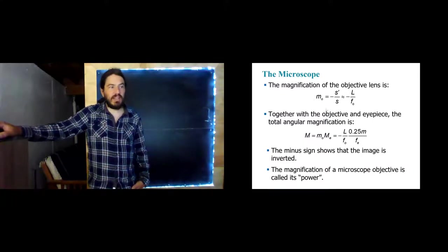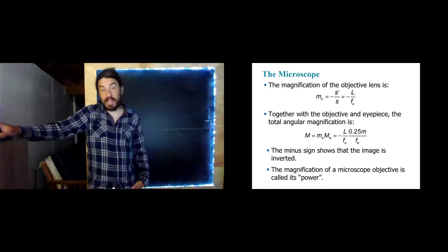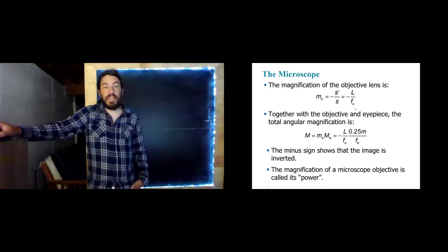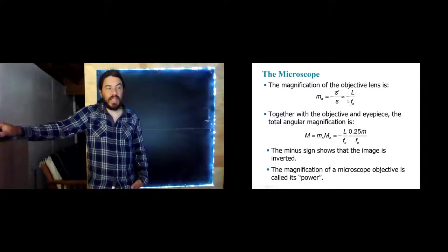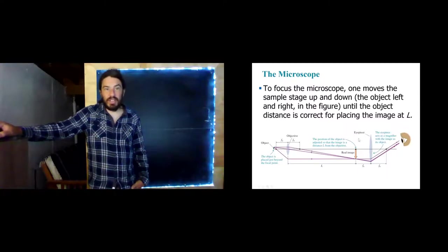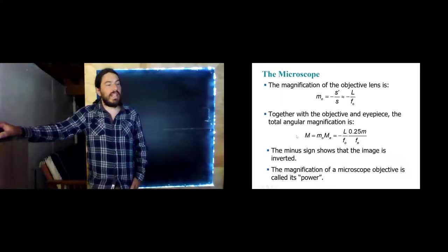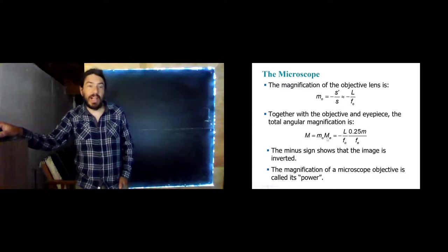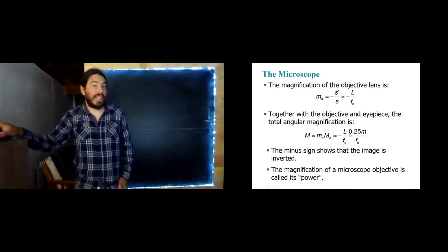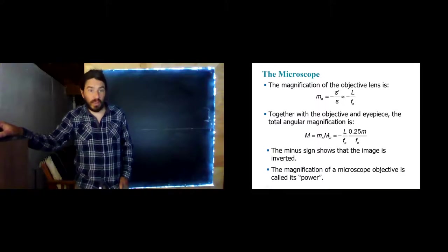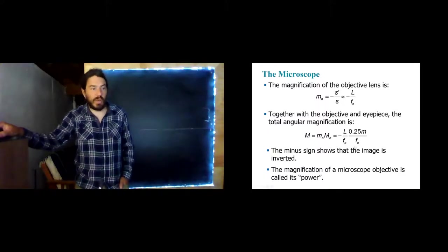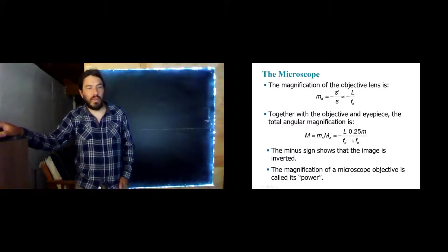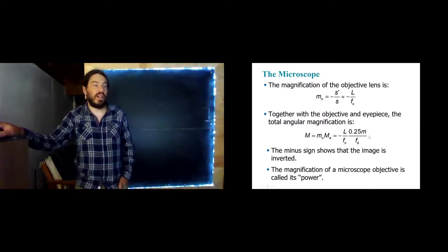Doing a little bit of math, the magnification for the objective lens is given by the length, and that's that standard 160 millimeters, divided by the focal length of the objective lens. It's negative because we do end up with an inverted image. We can then take together the magnification of the objective lens with the magnification of the eyepiece. And remember the eyepiece acts just like a magnifier. And remember that the magnification of a simple magnifier is 25 centimeters over the focal length of the magnifier. And so that's what we have here. 0.25 meters is 25 centimeters, divided by the focal length of the eyepiece.